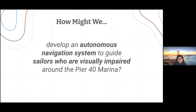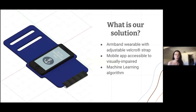After initial research, ideation, prototyping, and connecting interviews, our final goal is to develop an autonomous navigation system to guide sailors who are visually impaired around the Pier 40 marina. We developed an armband wearable with adjustable velcro straps that carries the user's phone, on which they'll have the marina navigation app downloaded. The app is tailored to those who are visually impaired and makes use of machine learning algorithms for accurate obstacle detection.